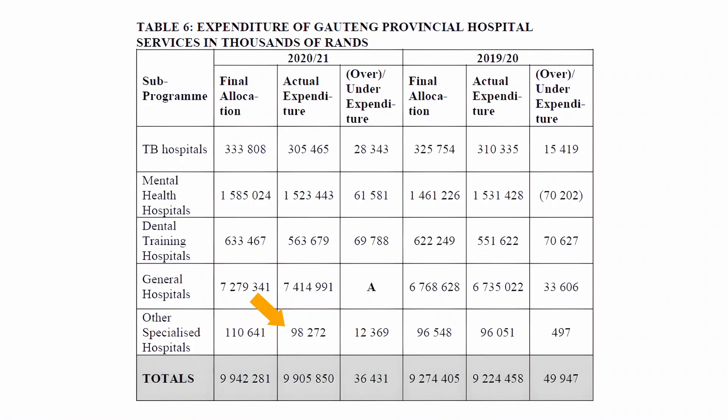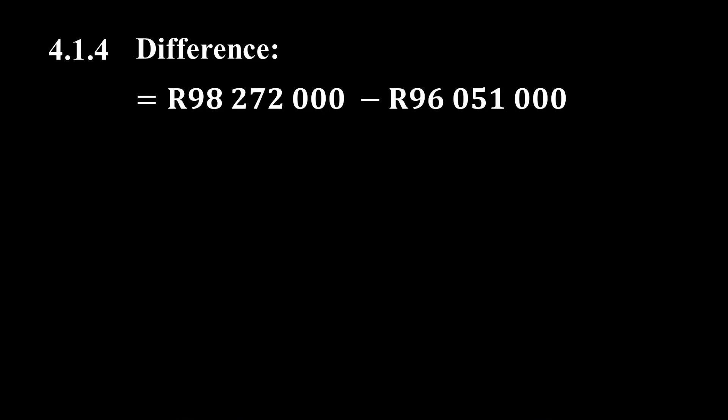In the 2020-2021 tax year, the actual expenditure for other specialized hospitals was R98,272,000, and in the 2019-2020 tax year the actual expenditure for other specialized hospitals was R96,051,000. The difference between these two values equals R2,221,000.